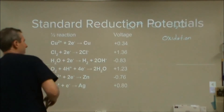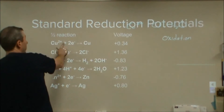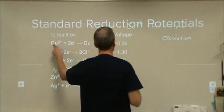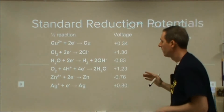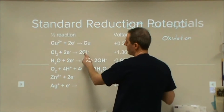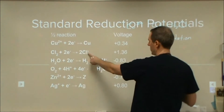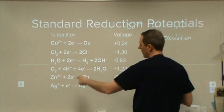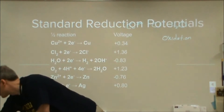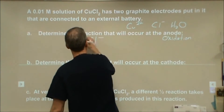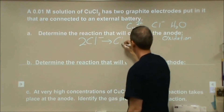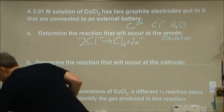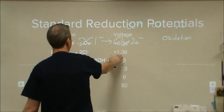Going back to our chart, we're looking for oxidation. We could oxidize copper to copper 2-plus, but we don't have any copper — we just have copper 2-plus. For the chloride, we could reverse the reduction reaction. We start with chloride and end with chlorine gas — that would be oxidation. The voltage on that is negative 1.36 volts.